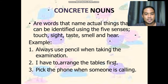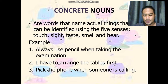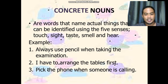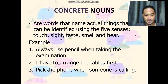Concrete nouns are words that name actual things that can be identified using the five senses: touch, sight, taste, smell, and hearing. The opposite of concrete nouns are abstract nouns, which cannot be identified using the five senses. For example: 'Always use a pencil when taking the examination.' The concrete noun is pencil. 'I have to arrange the tables first.' The concrete noun is tables. 'Pick the phone when someone is calling.' The concrete noun is phone.